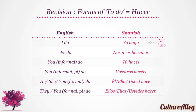Let's look at the forms of the verb to do or hacer. I do translates to yo hago. Note that it does not become aso like a regular verb would — it is hago. I do is yo hago. We do becomes nosotros hacemos — try that please. Nosotros hacemos.